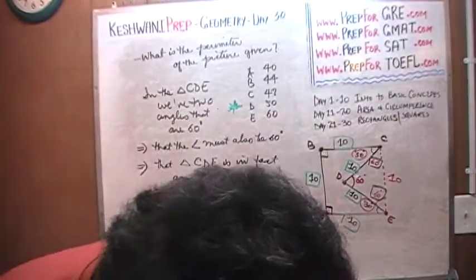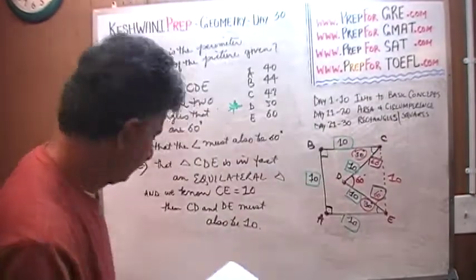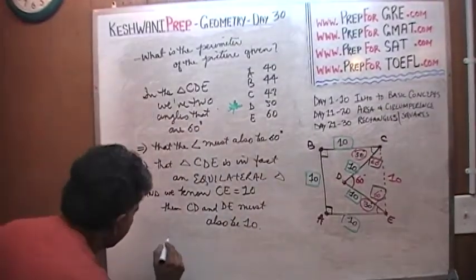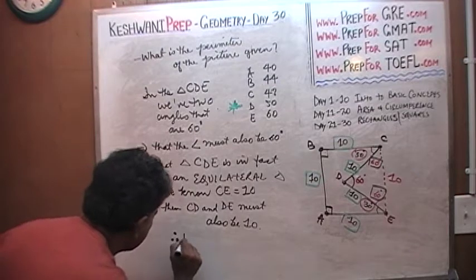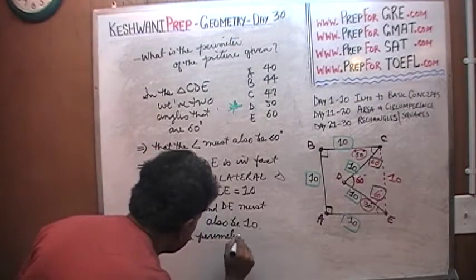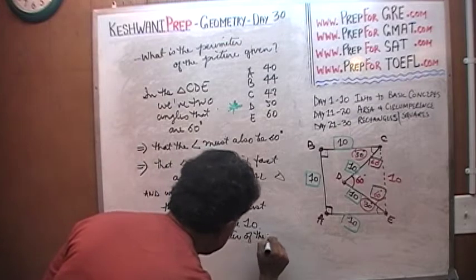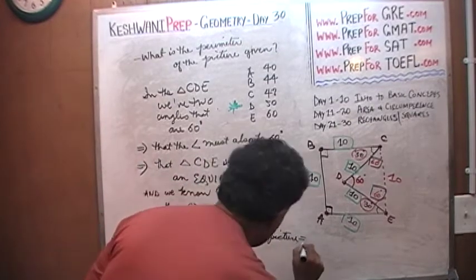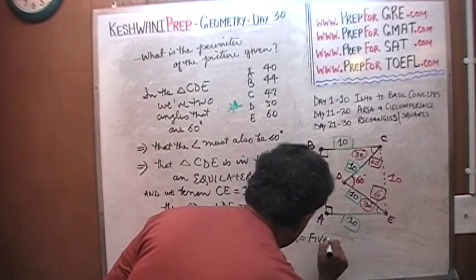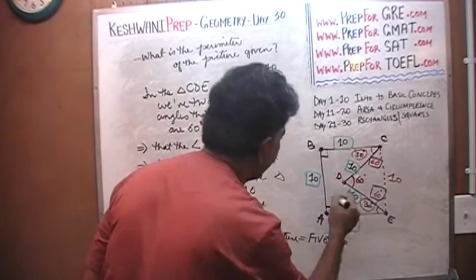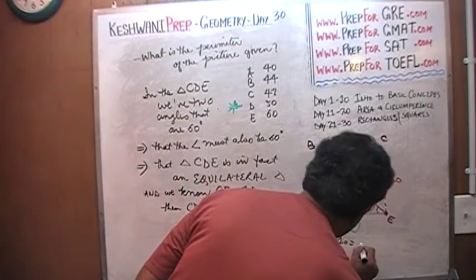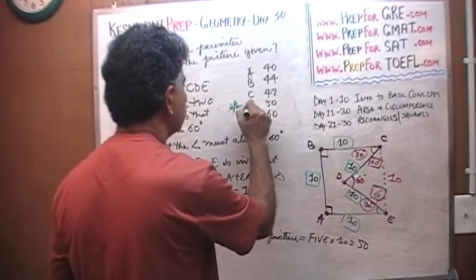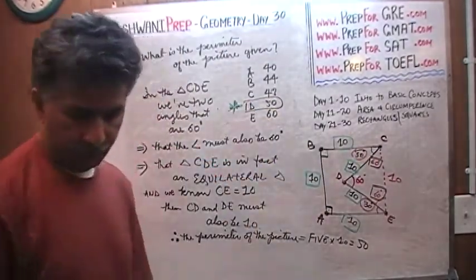Therefore, the perimeter, the question was what is the perimeter? Therefore, the perimeter of the picture equals five times 10, because there are five sides to it. 50, right here. That's it, that was the end of it.